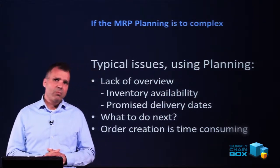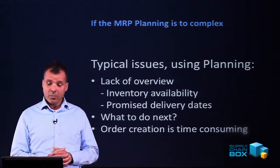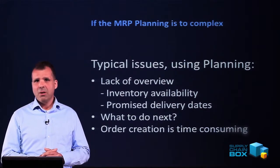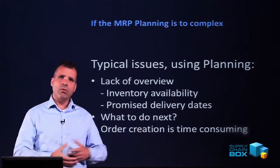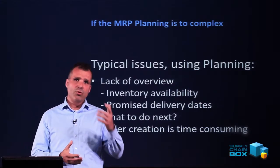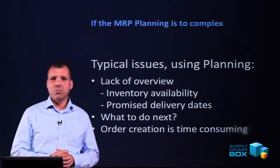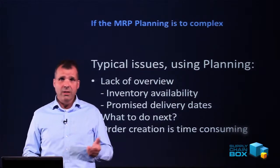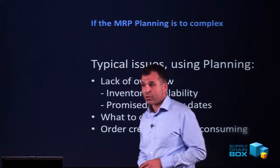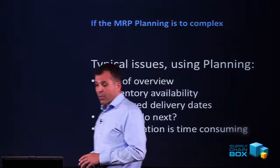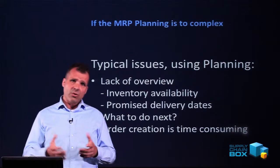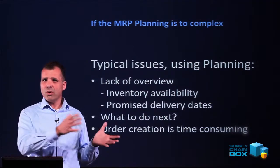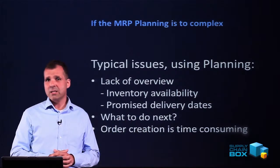The typical issues of using planning in NAV include the following. First of all, we have lack of overview, meaning it's difficult to see how an item evolves on the inventory, how the inventory profile looks, and how items relate to each other on different levels in the low-level code. This means inventory availability is difficult to see, and the promised delivery dates on sales orders and production orders are difficult to calculate because we can't see the specific orders all through NAV.